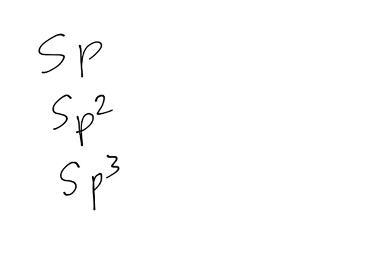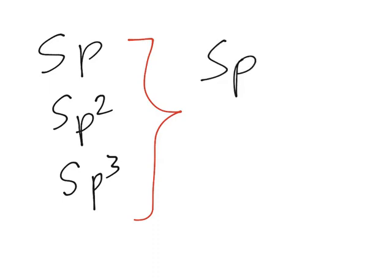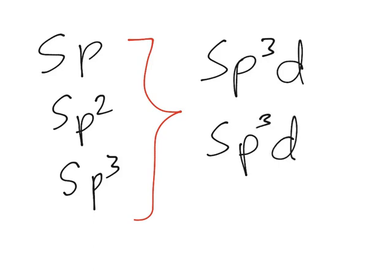In this video, I'm going to finish hybridization by talking about the other two hybrid orbitals. In previous videos, I talked about the sp, sp2, and sp3 orbitals, but I mentioned they're not the only ones, although they're the main ones you'll use throughout your chemistry learning. Most chemistry courses just focus on these three, but there are two more I'm going to talk about: the sp3d and the sp3d2 orbitals.